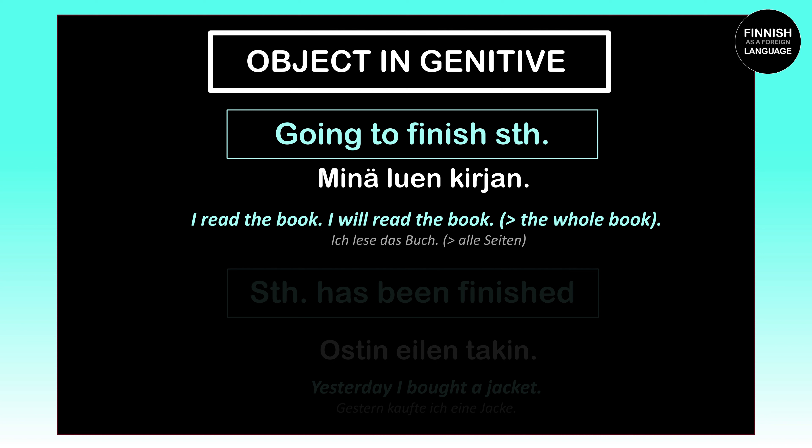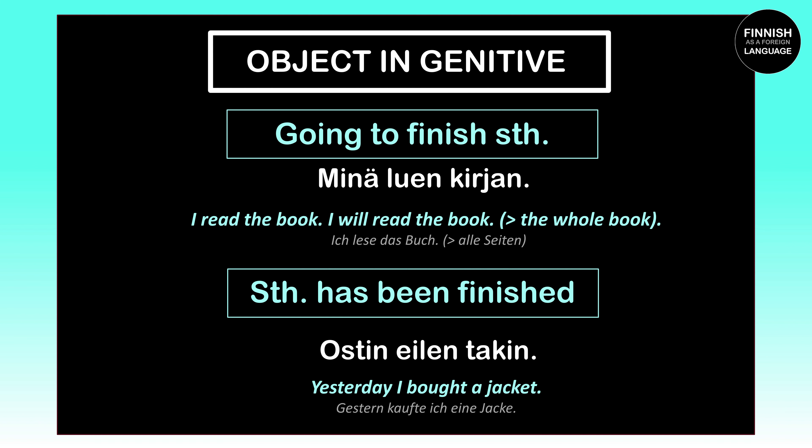The genitive case is also used for objects when the process is finished or the action is done. For example, 'Ostin eilen takin' means 'Yesterday I bought a jacket.' Our object here is the jacket, which is 'takki' in Finnish. Since the process is finished — I bought the jacket and now I have it — plus we're talking about one jacket as a whole, we have to use the genitive case. That is why 'takki' changes to 'takin.'